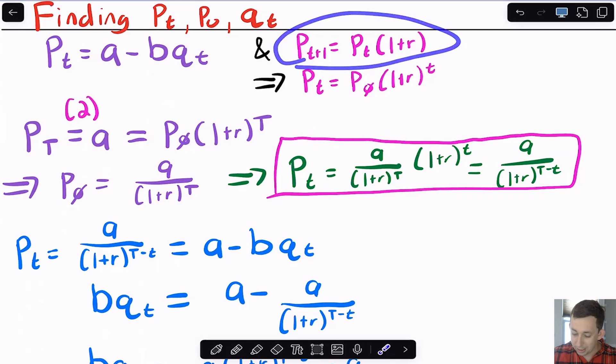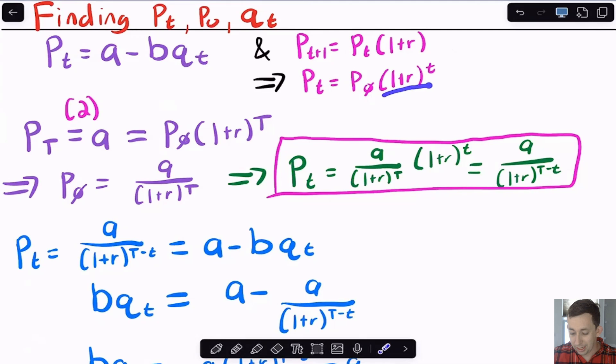But what you get from this is if you go all the way back to P0, you're going to get that PT is just P0 times one plus R to the T, because whatever you started with, it's just been increasing at the interest rate for T years. And so that's how you get PT.